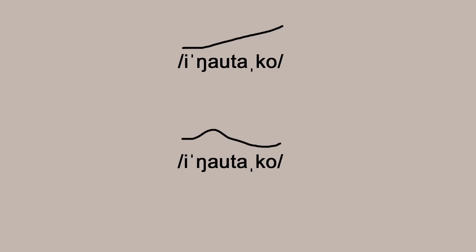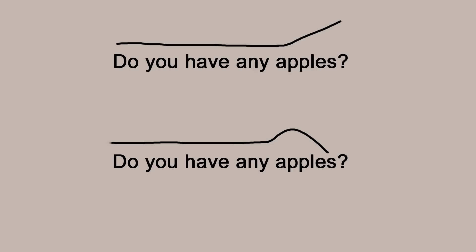The American English pattern is: do you have any apples? Whereas the British English pattern is: do you have any apples? That difference alone highlights that intonation is not just something that humans naturally do — there are not universal intonation patterns. These things differ from language to language and from dialect to dialect.